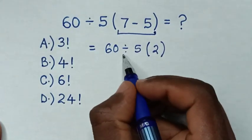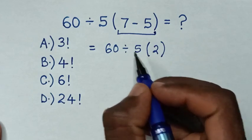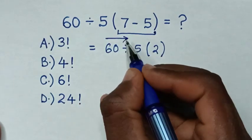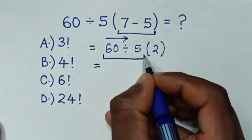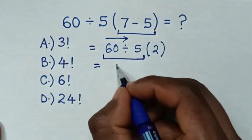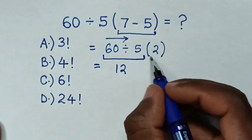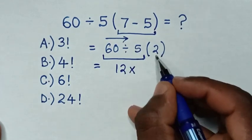Then, in next step, we deal with the division and then multiplication, from left to right. So, it will be equal to, starting to deal with this division operation of 60 divided by 5 is 12, then we open the bracket, it will be times 2.